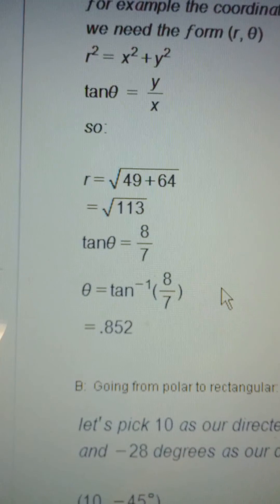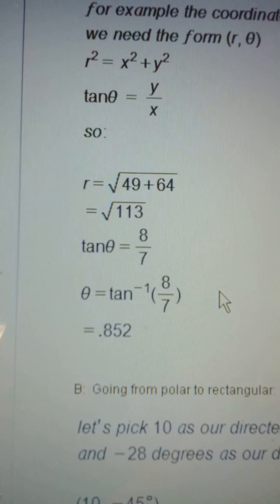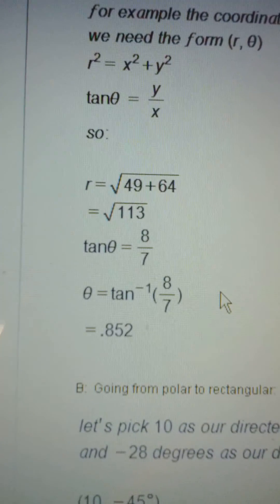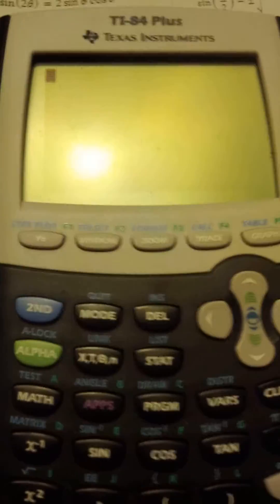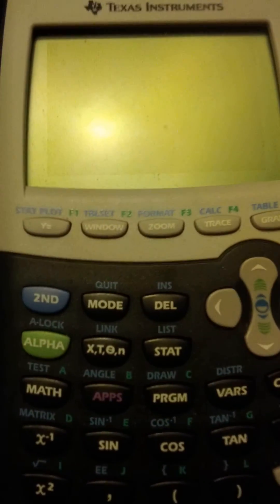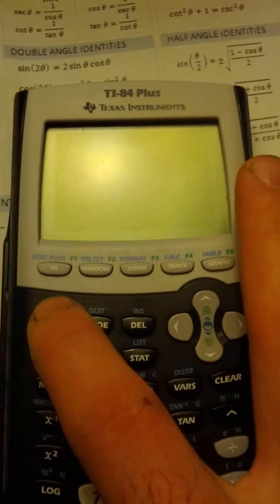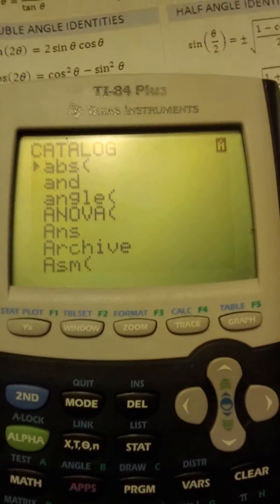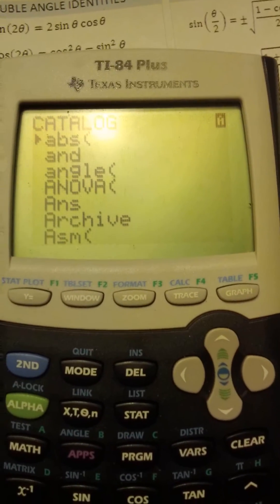All right, the first thing to get to inverse tangent: you hit second and then you go all the way down to zero and you hit catalog. This gives you a list of every single thing you can do with the calculator.